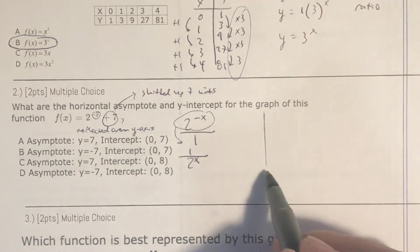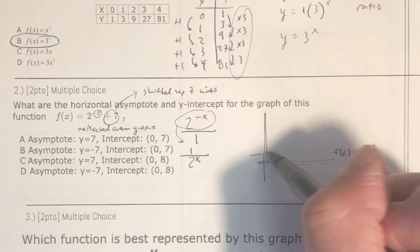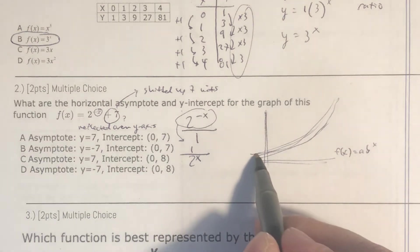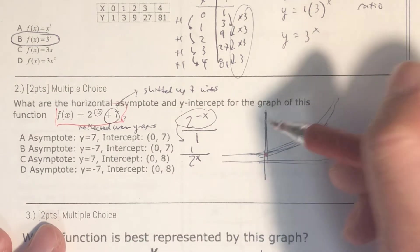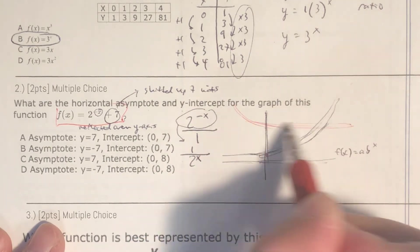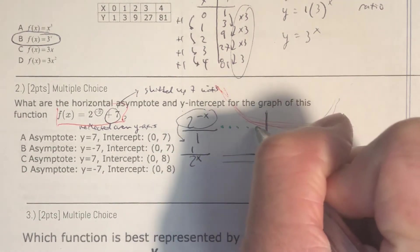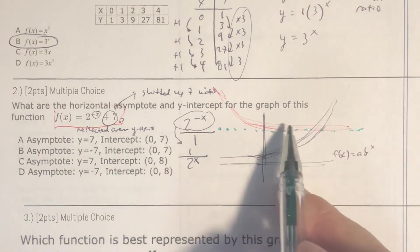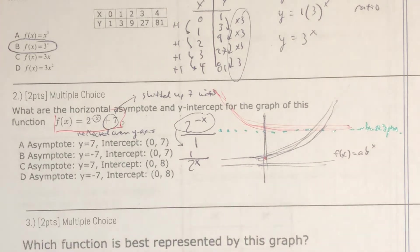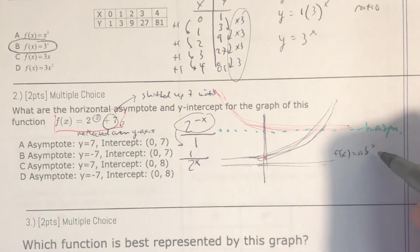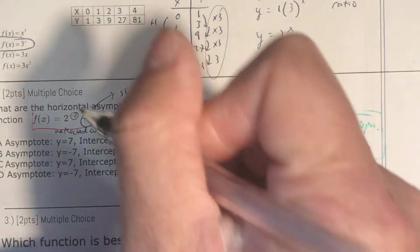So if you normally have a graph, f(x) equals b to the x power, your graph is going to look something like that. But this graph is being shifted up 7 units from here and then swung over. So your graph is going to look something like that. This point right here, this green here, is the horizontal asymptote.